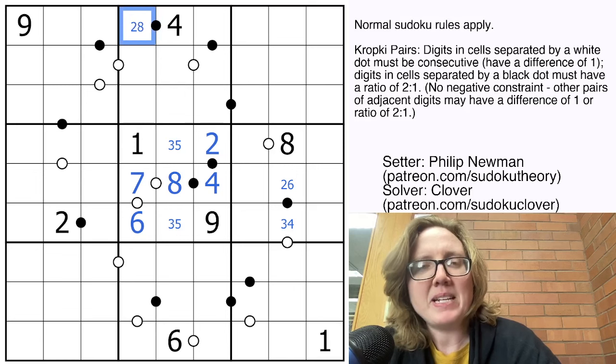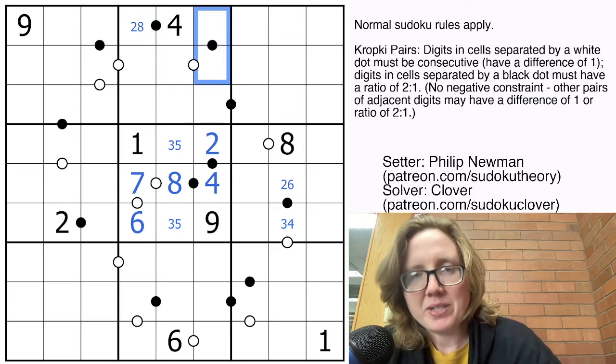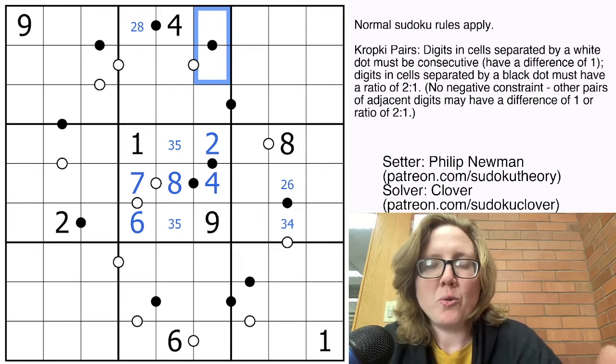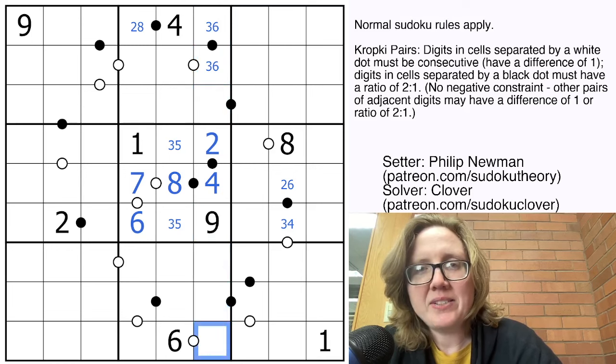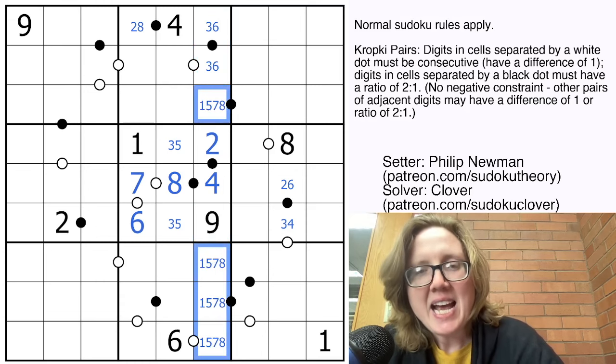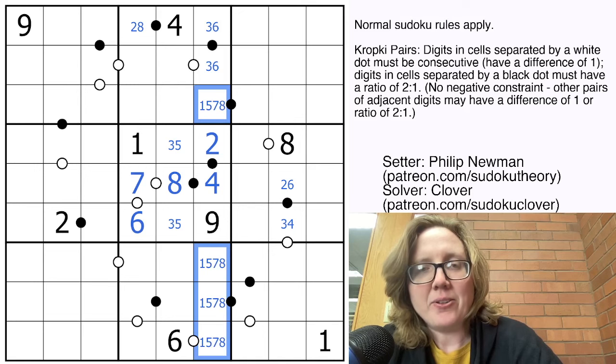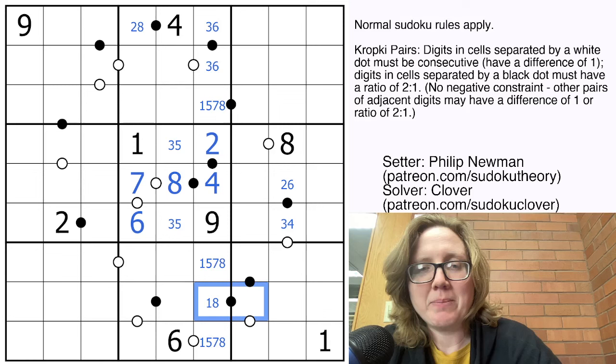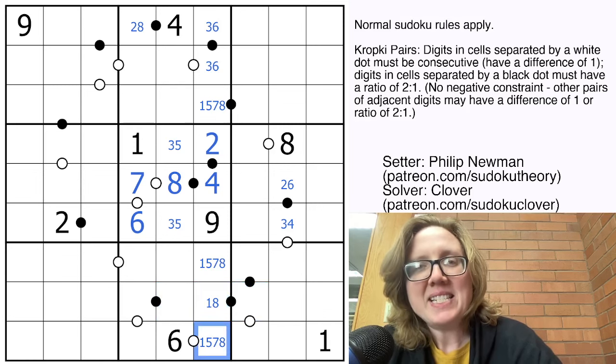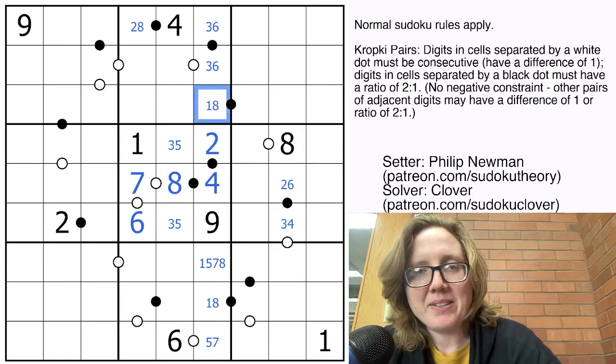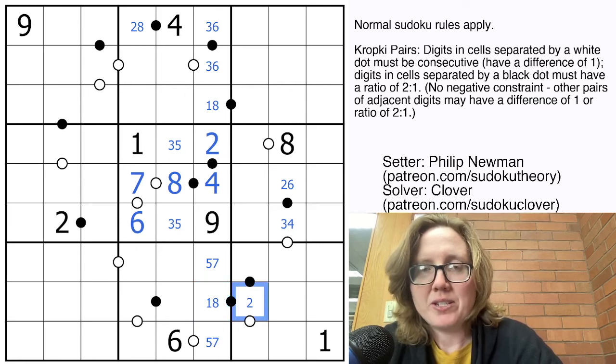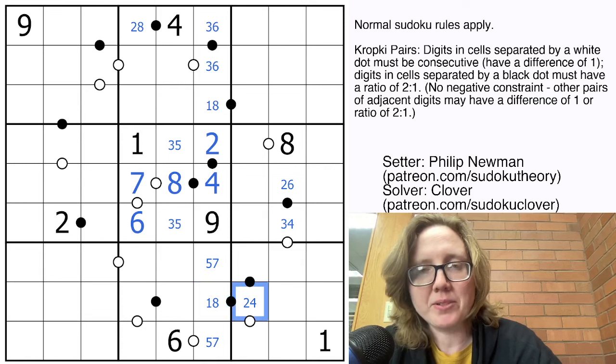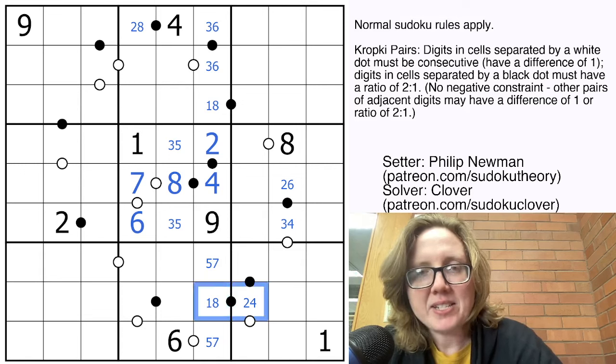Okay, we have this 4 here, and that has to be next to either a 2 or an 8. We have this other pair here, and this one's kind of restricted, because it has to be a 1 to 2 ratio, but we can't have a 2 or a 4 at all because of what's in the column already. So this actually has to be a 3, 6 pair. What does that leave us with in this column? So we still need a 1, a 5, a 7, and an 8. Now, some of those digits can't actually go on a black dot at all. 5 and 7 specifically are just not going to work on a black dot.